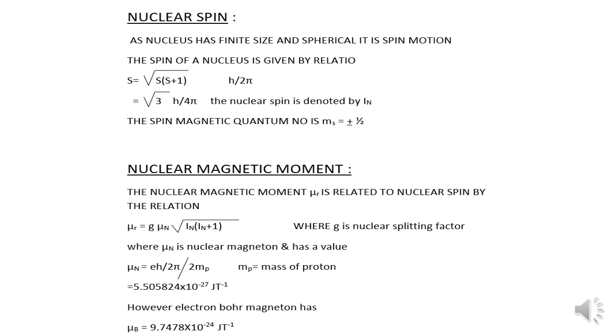Now let us know about nuclear spin. As nucleus has finite size and spherical, it is having spin motion. The spin of a nucleus is given by the relation S equals square root of S into S plus 1 into H by 2 pi, which comes to be root 3 H by 4 pi. The nucleus spin is denoted by the symbol I subscript n. The spin magnetic quantum number is denoted by the letter Ms which is always having a value of plus or minus half.